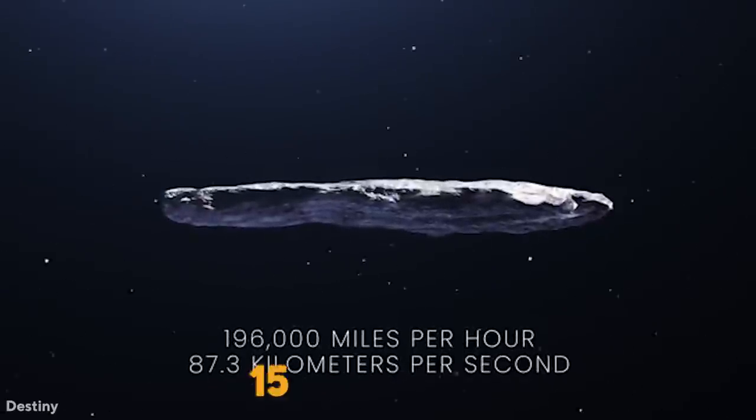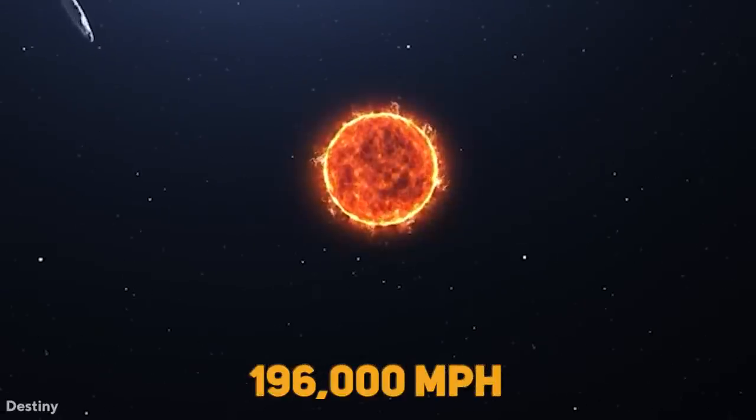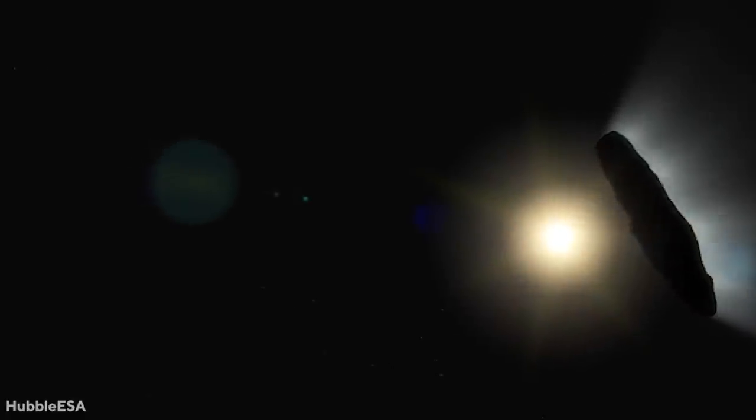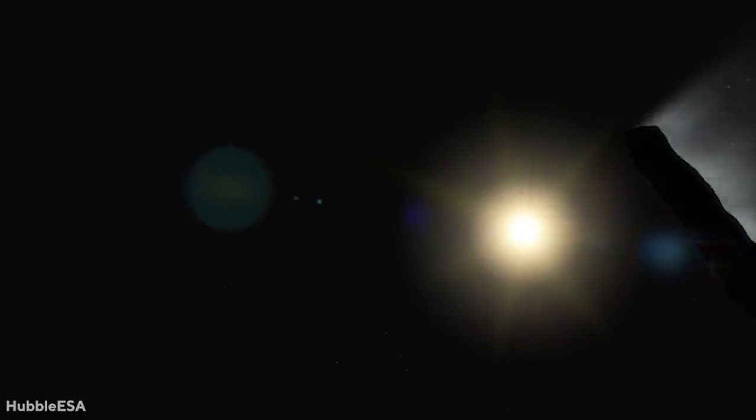According to NASA, when Oumuamua was closest to Earth, it was tumbling through the inner solar system at 196,000 miles per hour. That is over three times faster than the average speed of a main-belt asteroid. Despite this, almost four years later, Oumuamua is still in our solar system.